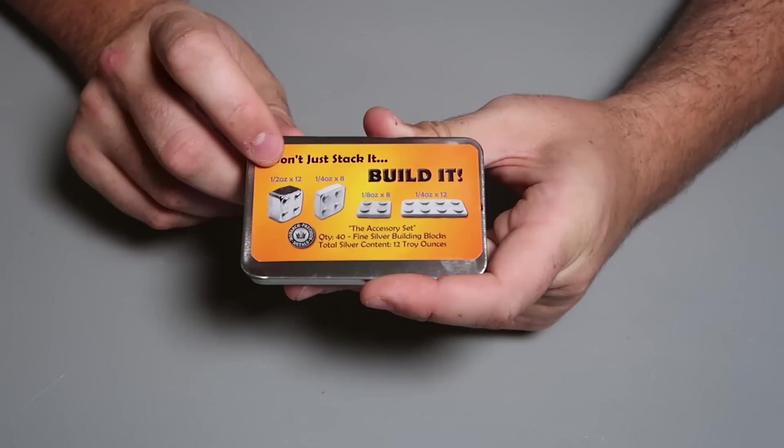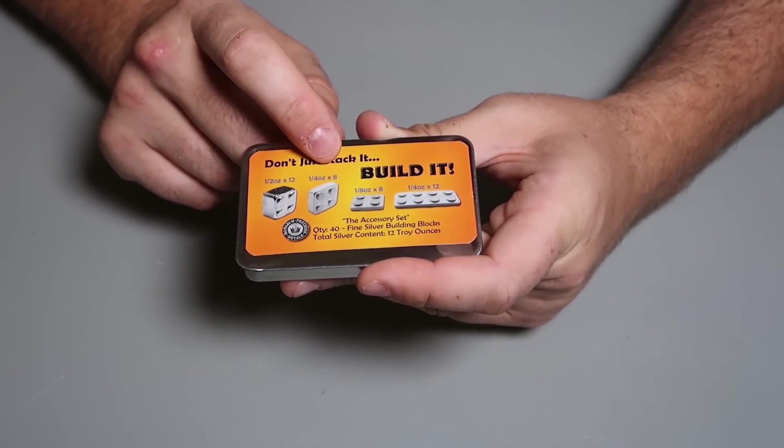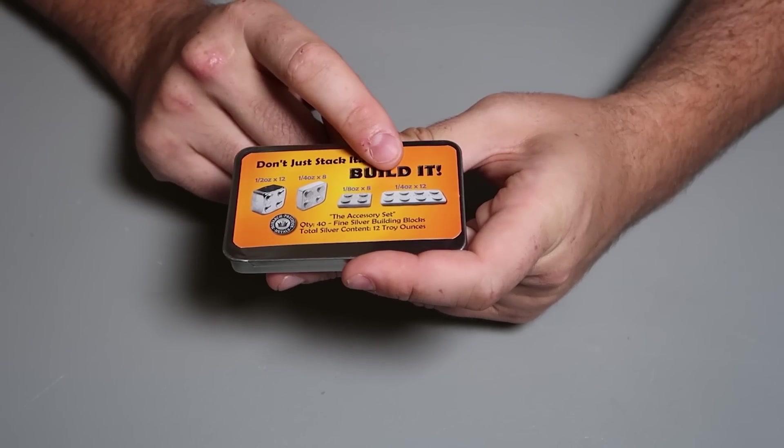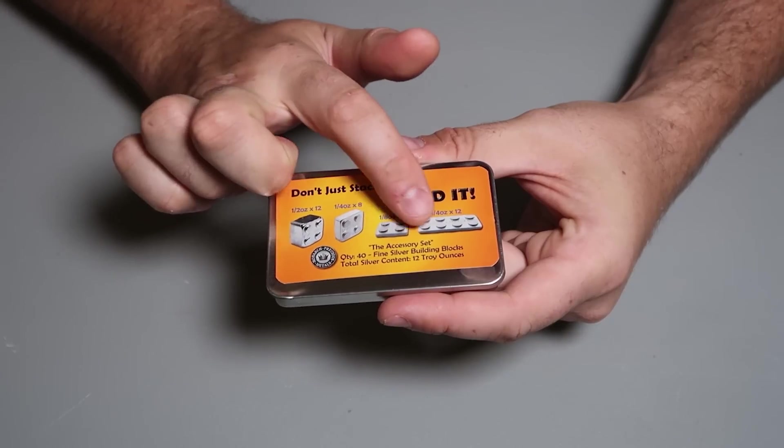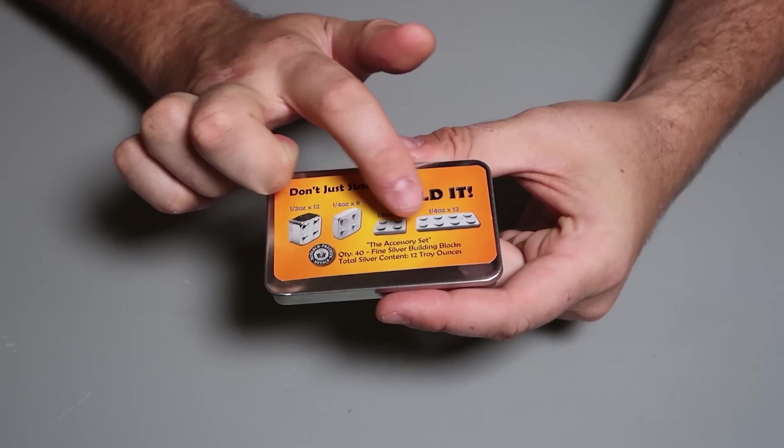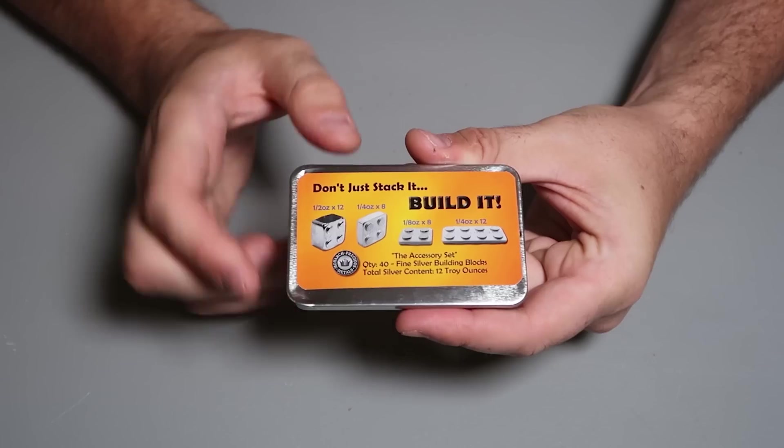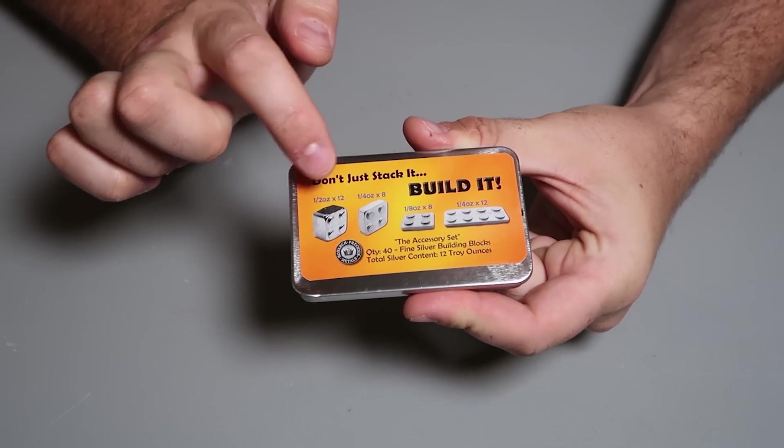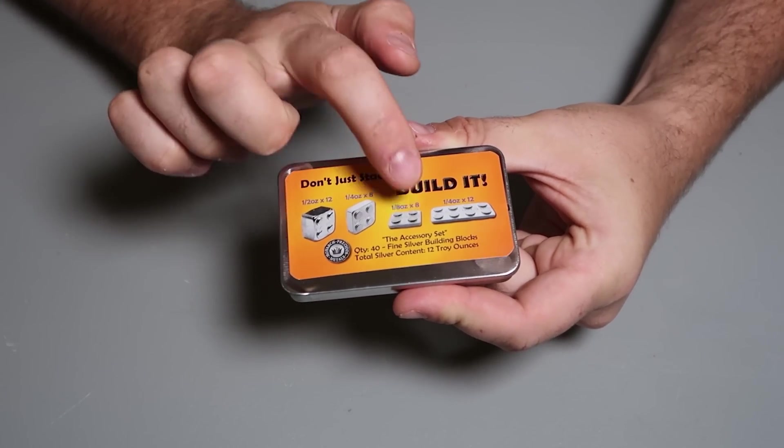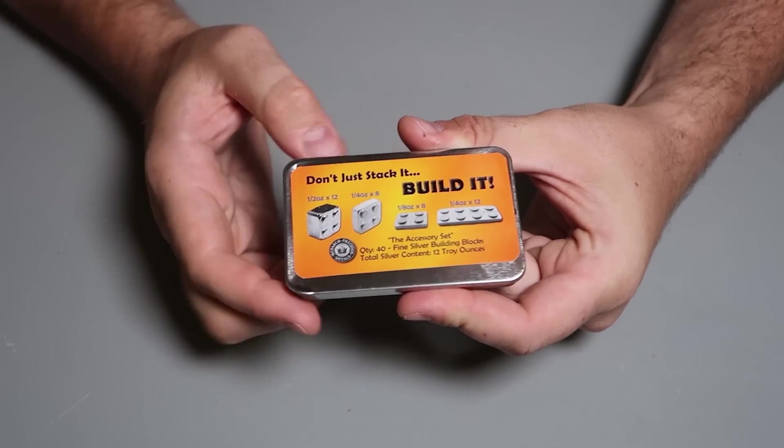Boom, half an ounce, one-fourth of an ounce, one-eighth of an ounce, and one-fourth of an ounce. The accessory set, quantity 40, fine silver building blocks, total silver content is 12 troy ounces. So looks like you have 12 of this, 8 of this, 8 of this, and I guess 12 of that.